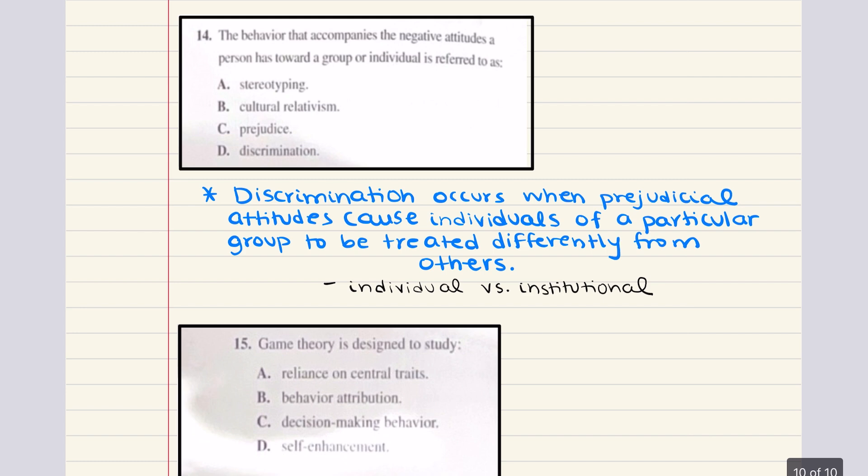14 says the behavior that accompanies the negative attitudes a person has towards a group or individual is referred to as blank. Is it stereotyping, cultural relativism, prejudice, or discrimination? Discrimination is when prejudice attitudes cause individuals of a particular group to be treated differently than others. Remember, prejudice is an attitude, but discrimination is a behavior. And so the correct answer for 14 is going to be D.